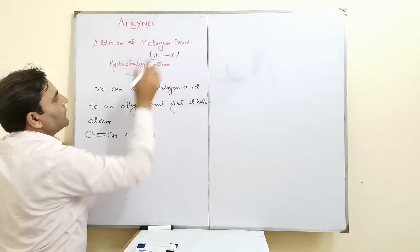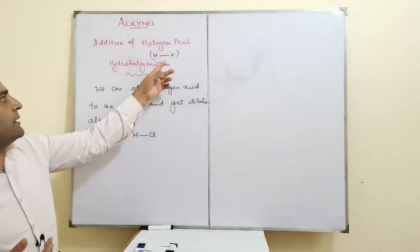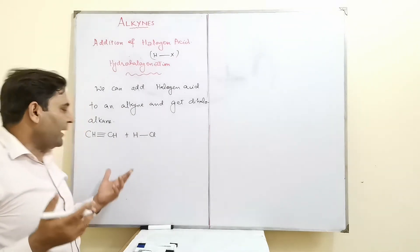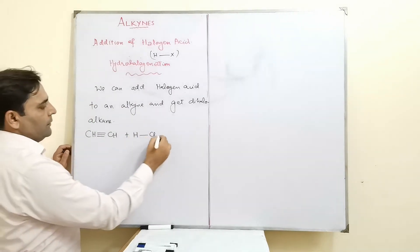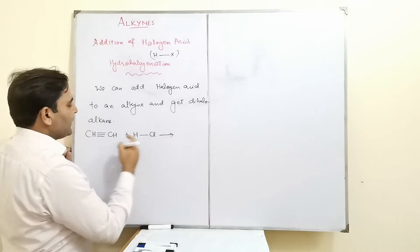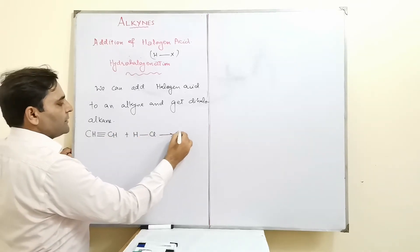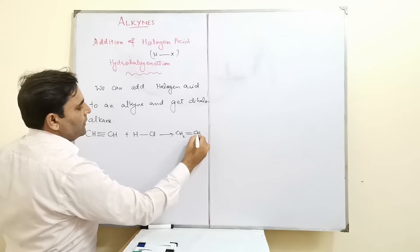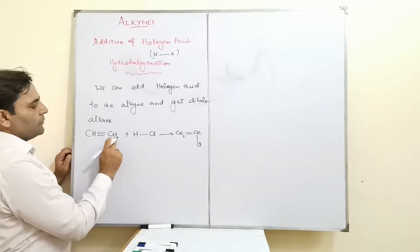Halogens are fluorine, chlorine, bromine, or iodine - we use HCl and HBr to add to this triple bond. The first addition is just hydrogen and chlorine. We have one carbon to add chlorine and the other carbon gets hydrogen.